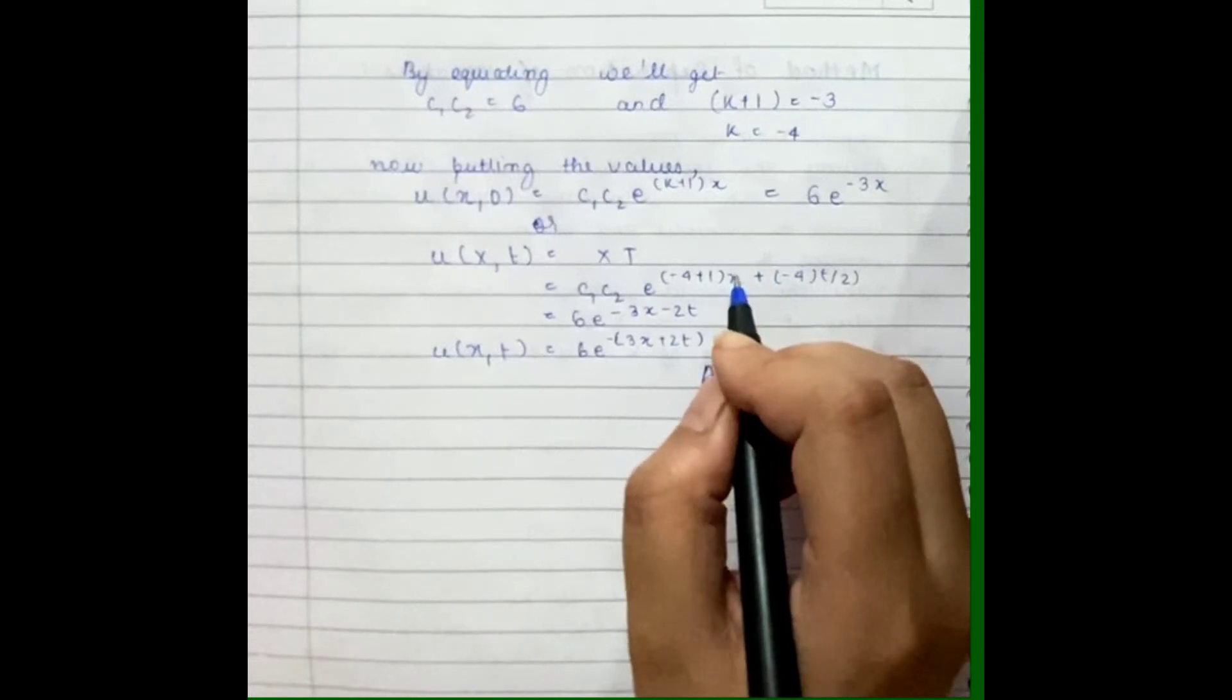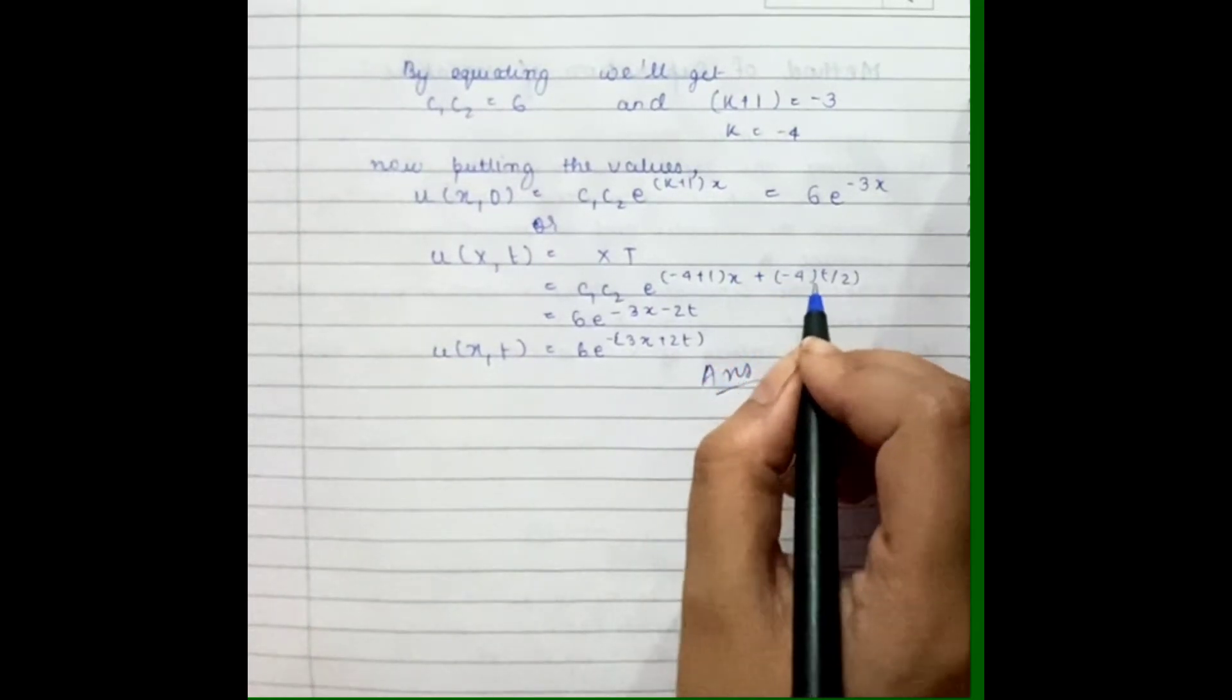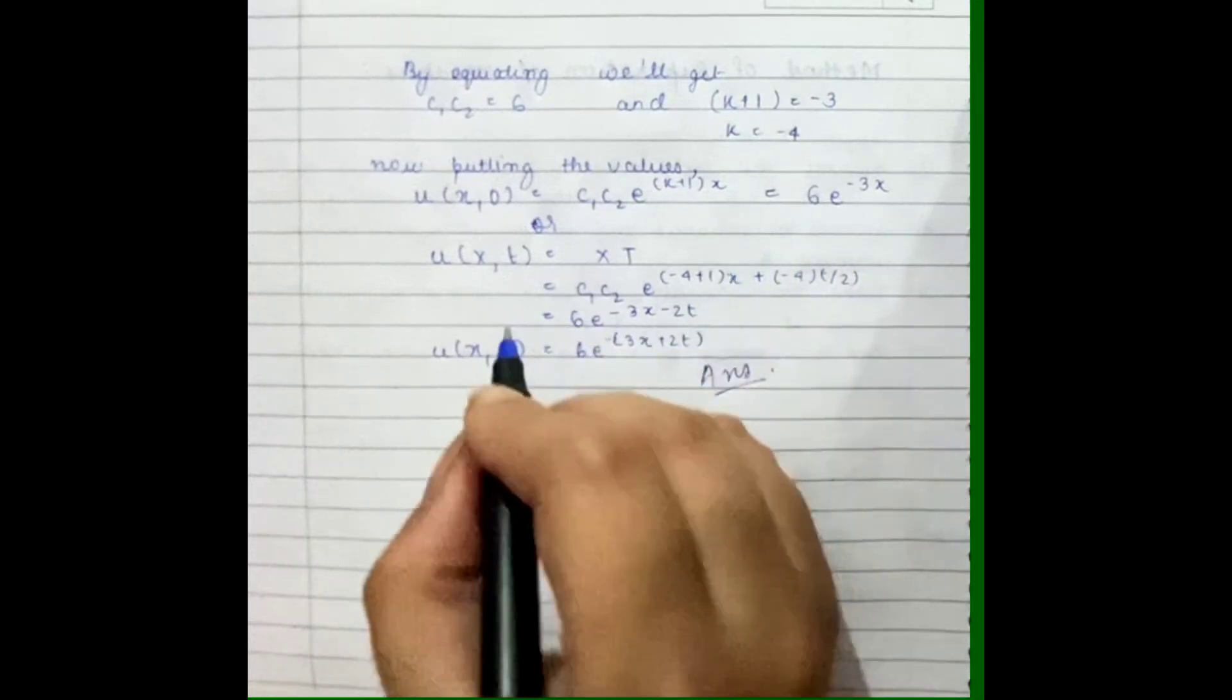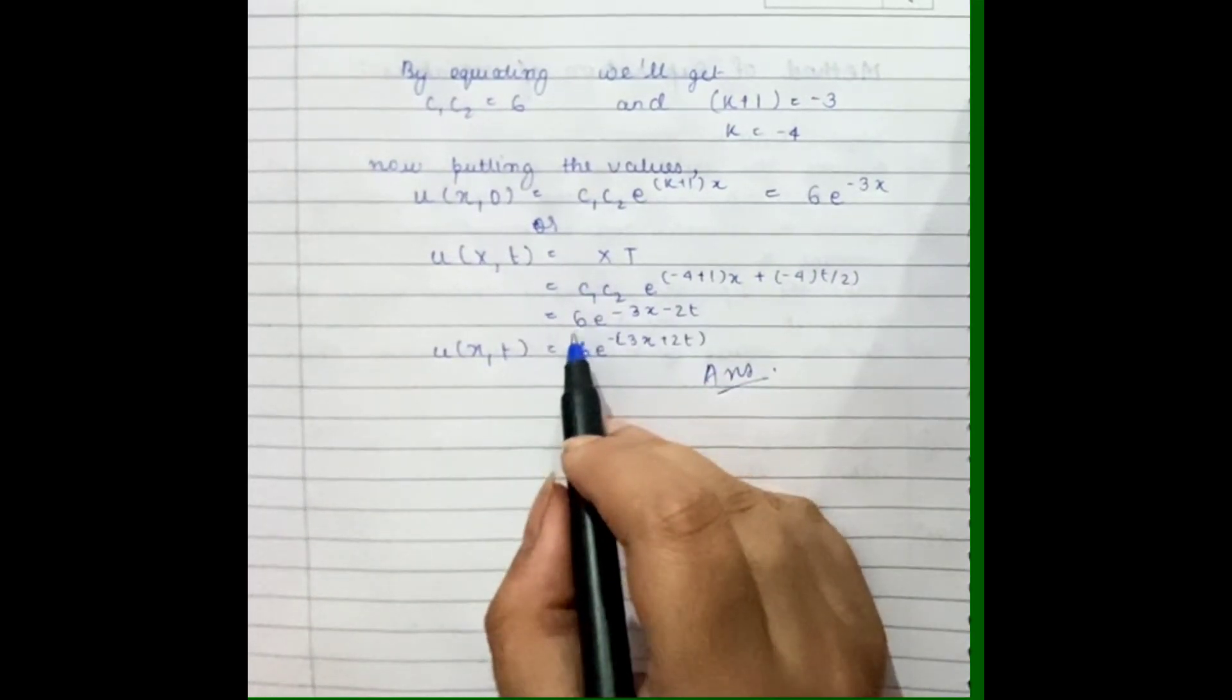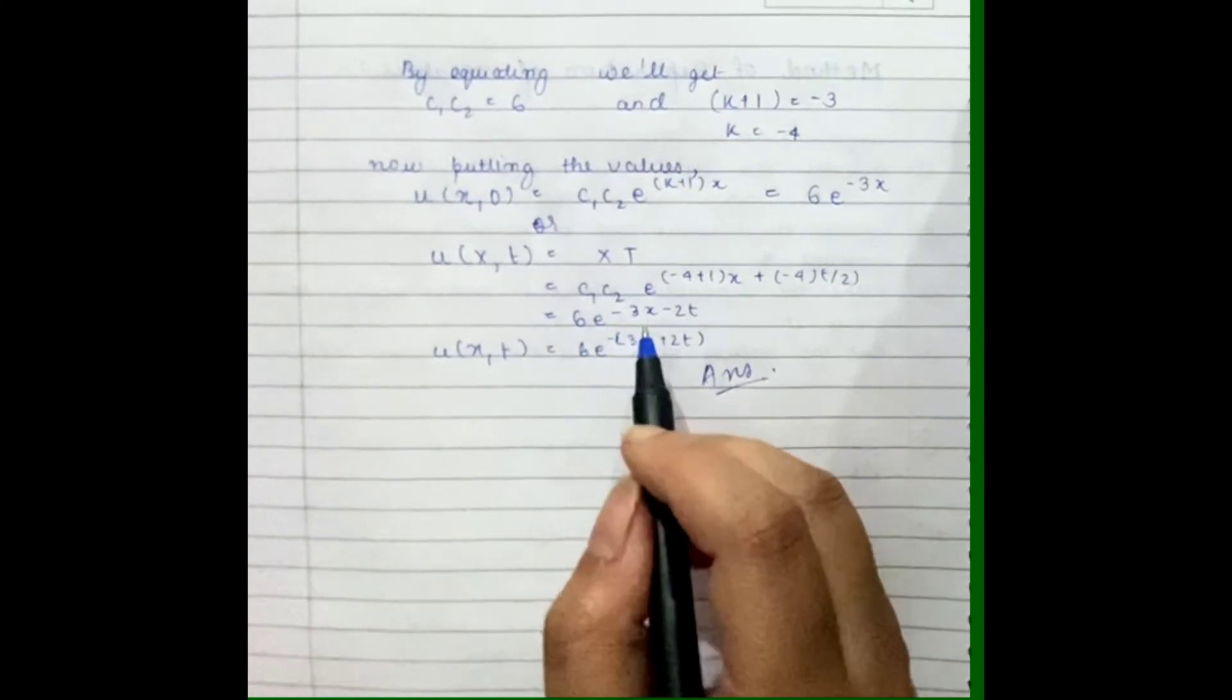Which will lead to the answer being 6e^(-3x - 2t).